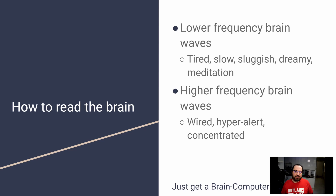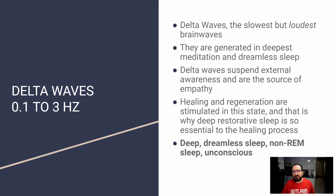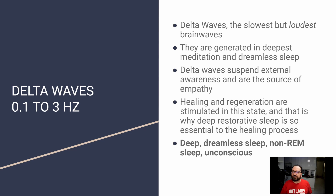The lower frequency brainwaves typically associate with slowness — tired, slow, sluggish, dreamy meditation. Higher frequency brainwaves typically activate when you are being hyper-alert, concentrated, wired, active. If we drill in a little bit deeper — pun intended — the slowest brainwaves are the delta waves. Any ranges I give you here are subject to which study you are reading — there are slight differences — but roughly the slowest brainwaves are within this range, and they are typically generated when you are in deepest meditation or dreamless sleep. You can associate delta waves with healing and regeneration, deep dreamless sleep, non-REM sleep, unconscious states — when you are really recovering and not seeing any dreams.